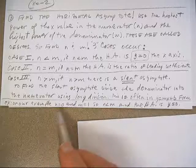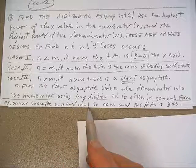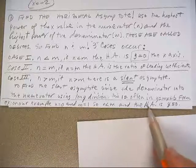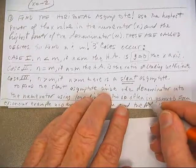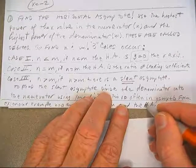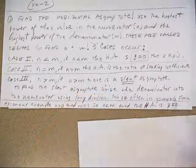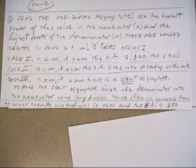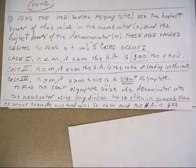Okay, so on our example of above, n was 0 and m was 1. So n was smaller, and the horizontal asymptote is y equals 0. Everybody repeat after me, over and out.